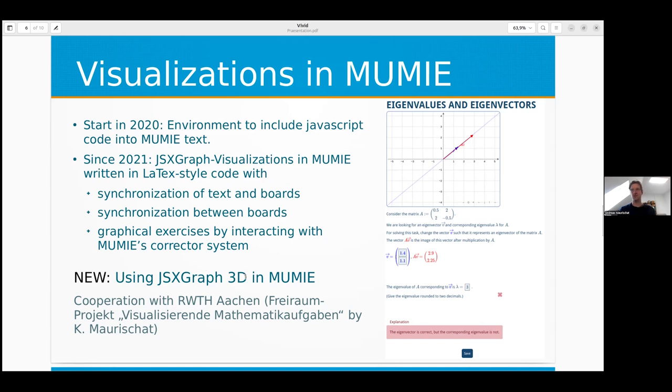This is a cooperation with RWTH Aachen. Actually, it's a project of my wife, Catherine Mavry-Schet. She's also at RWTH Aachen. For those in Germany who know about the Freihombud, it's called Visualisieren den Mathematikaufgaben. In that framework, we made the software to integrate JSXGraph and they will create a lot of content, which is also open source.